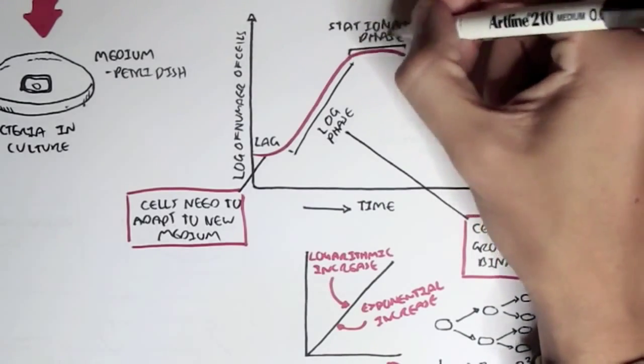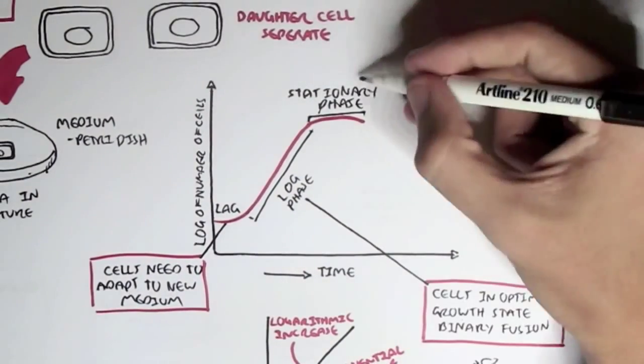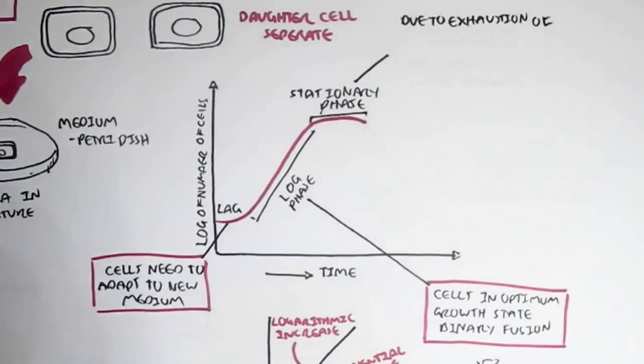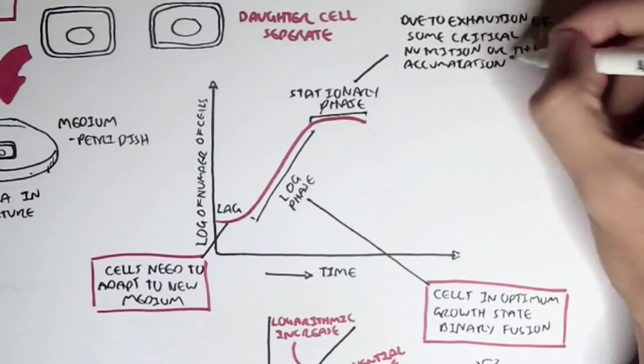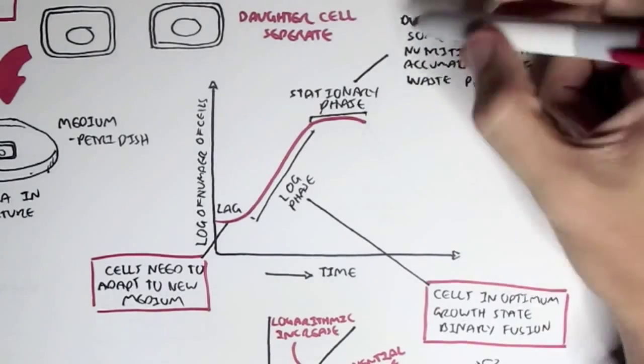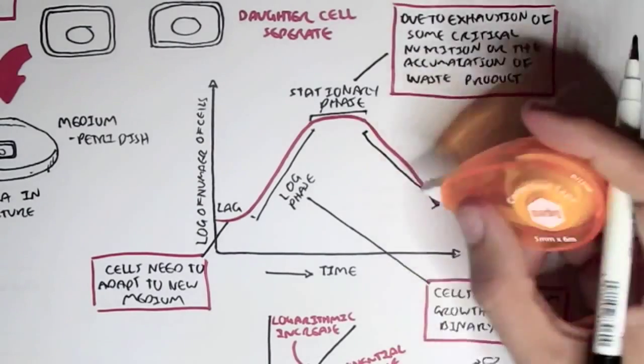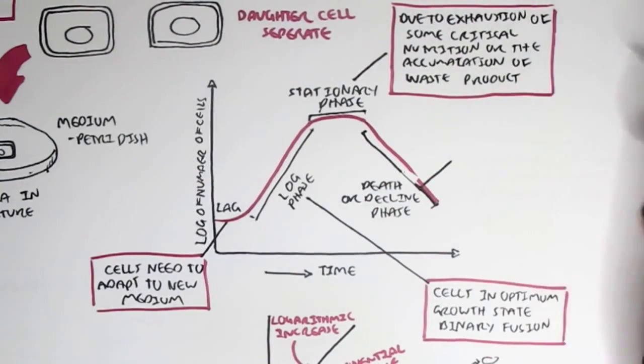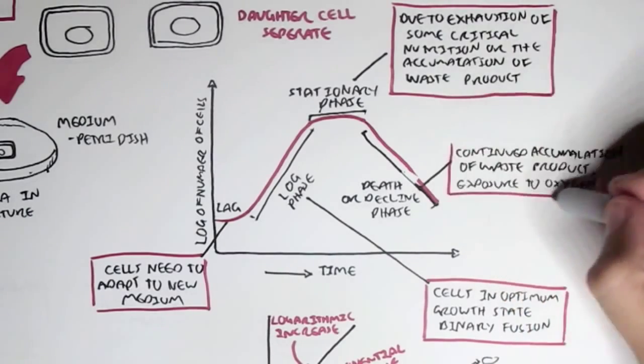Now after the log phase, we have the third phase, which is a stationary phase. And this is, as you can see, it just goes flat. The logarithmic number of cells just becomes flat, it doesn't increase. And this is due to the exhaustion of some critical nutrition, or the accumulation of waste product, which basically, essentially slows the growth, or stops the growth of the bacteria in the culture. And then, after the stationary phase, we have the death or decline phase. And this essentially occurs through the continuation or accumulation of waste products, or exposure to oxygen, perhaps. And in this phase, you can see that the number of bacteria decreases. I hope that made sense. The graph I just drew essentially showed us the four phases of bacterial growth.